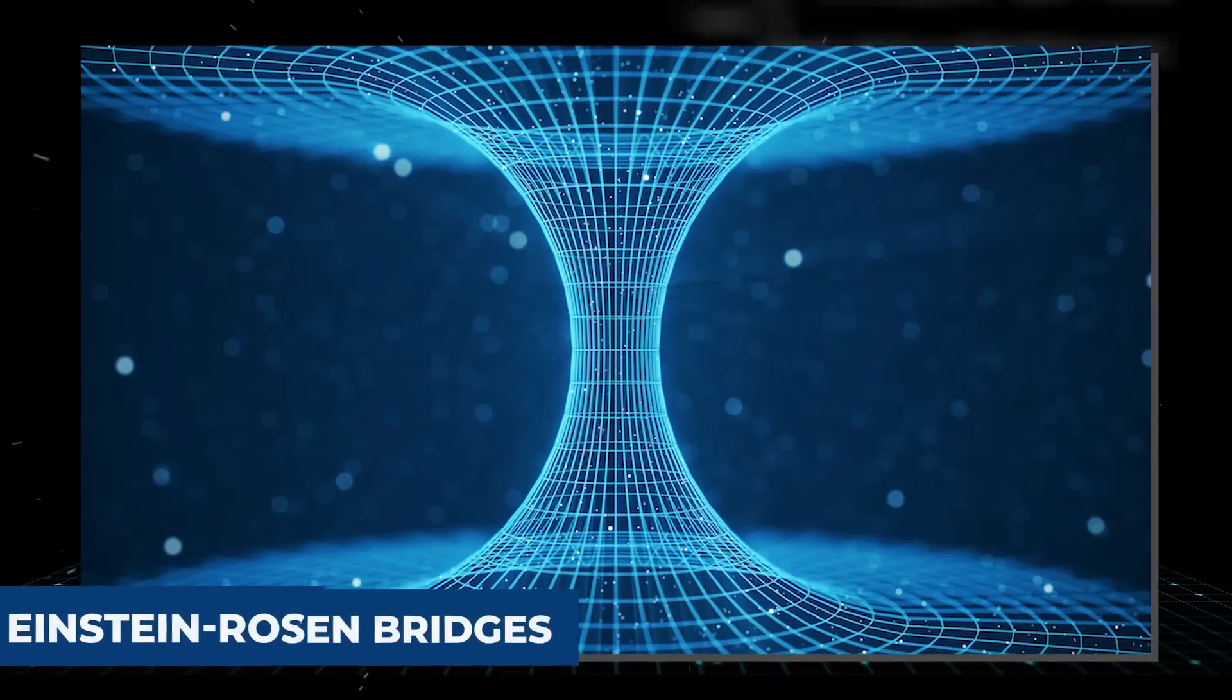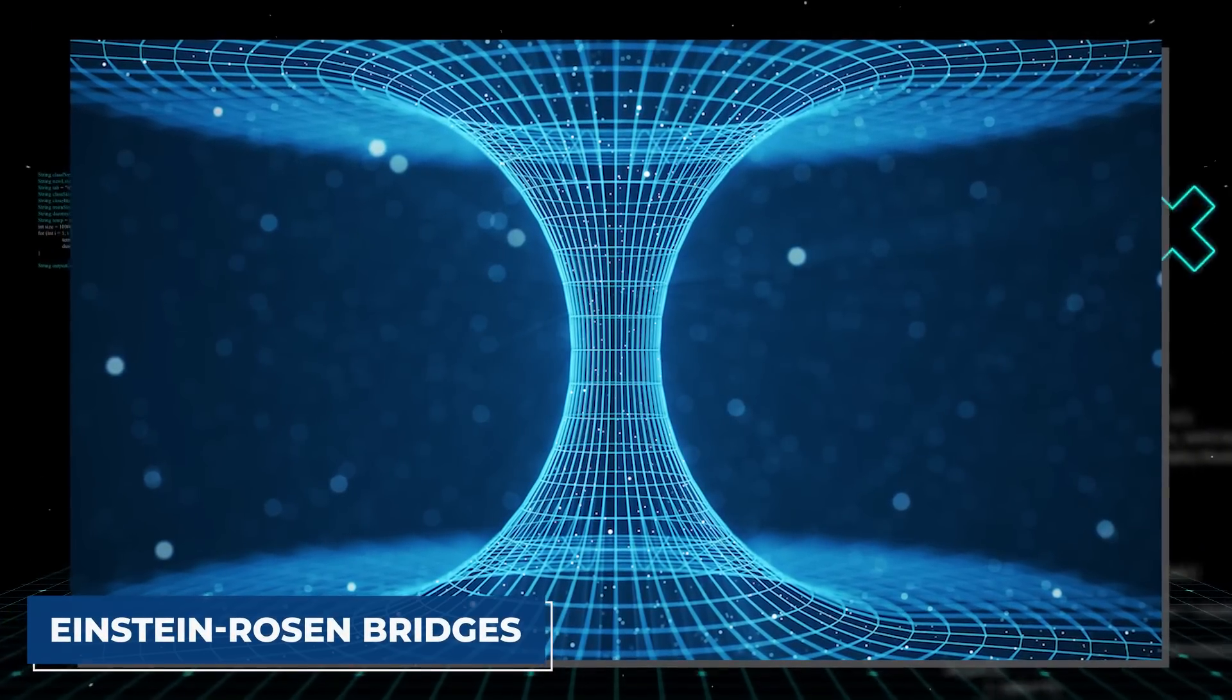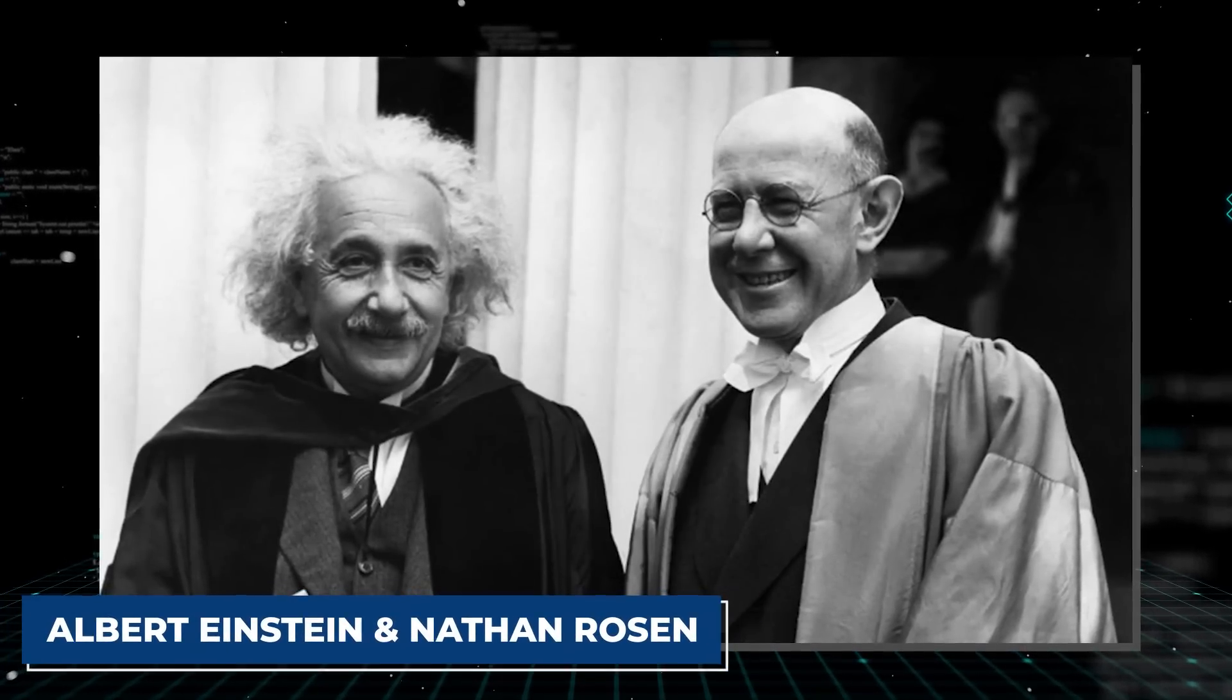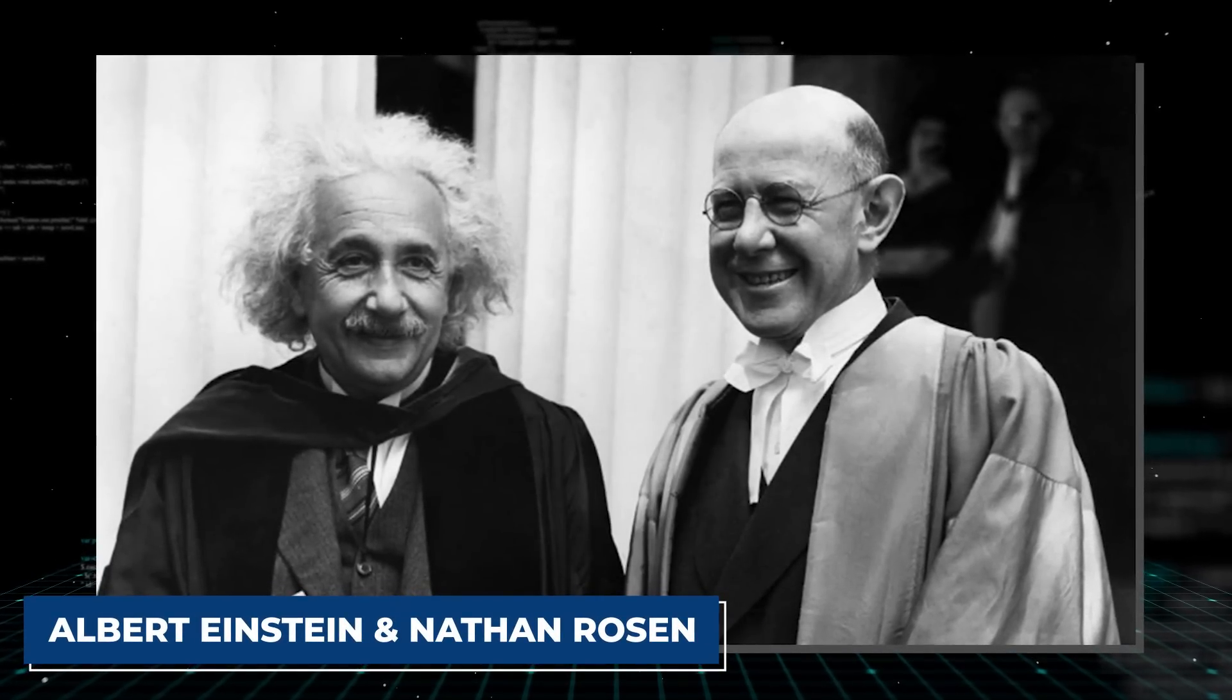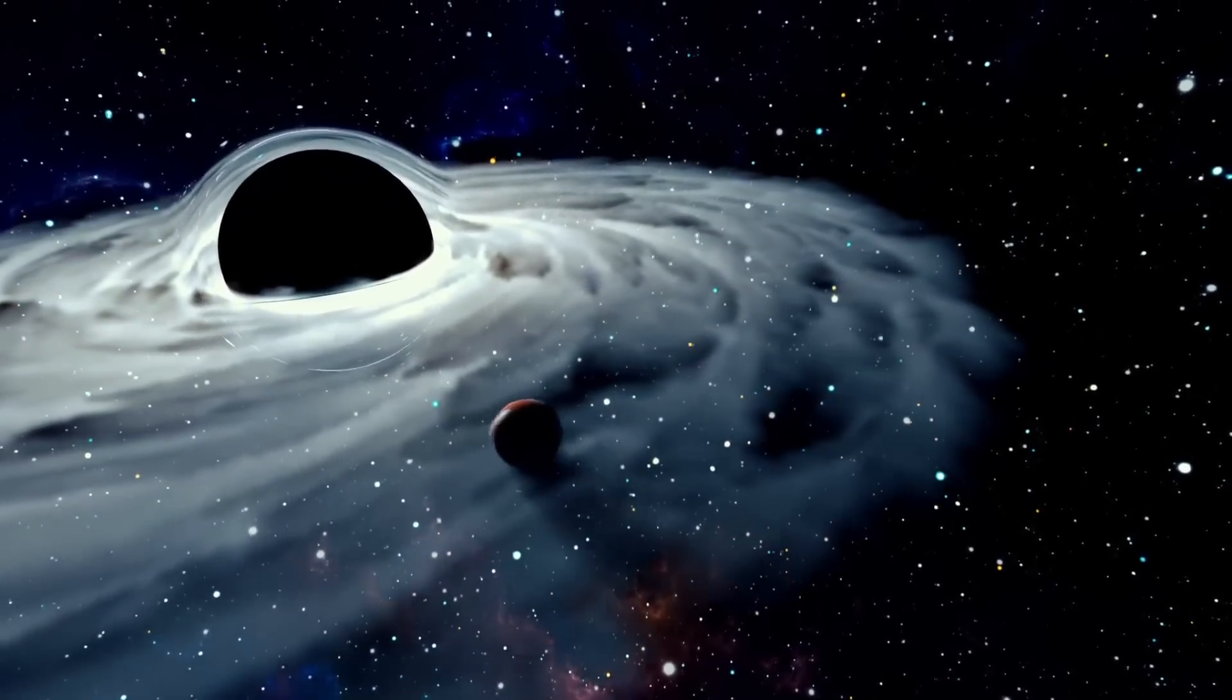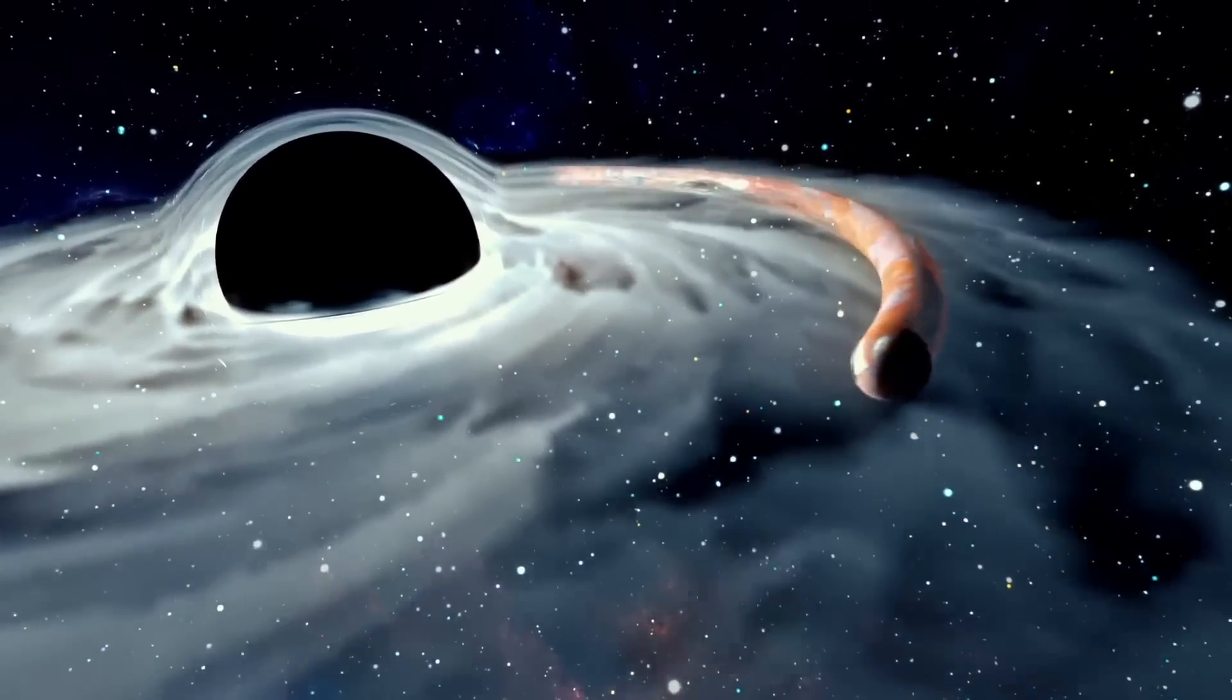You might have heard of wormholes referred to as Einstein-Rosen bridges. That is because the simplest possible wormhole solution was discovered by the great scientist Albert Einstein and Nathan Rosen in 1935. The duo started with the mathematical solution of a black hole, another terrifying phenomenon.